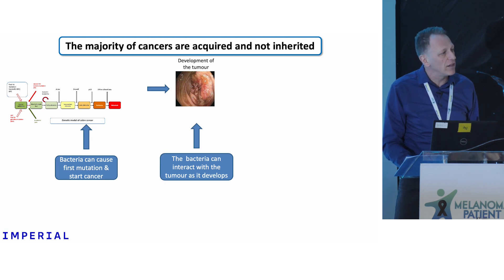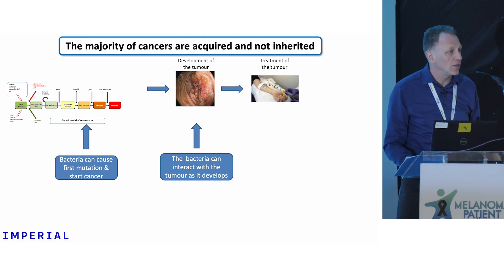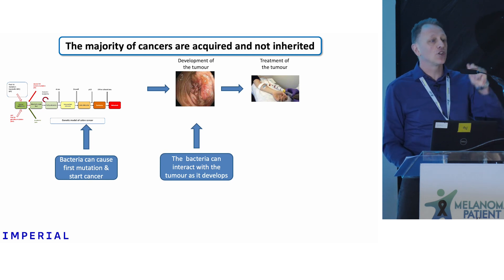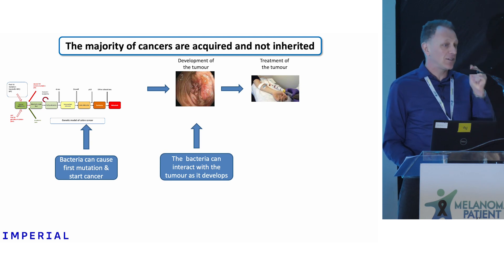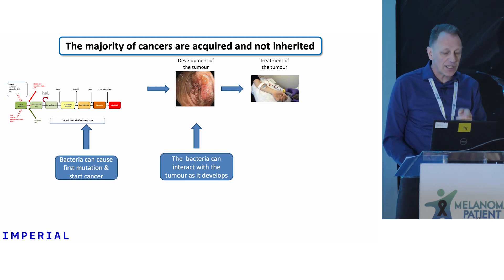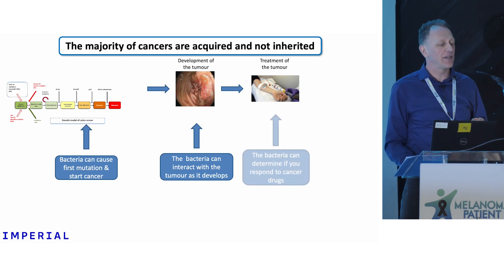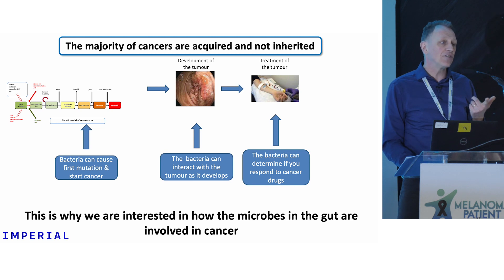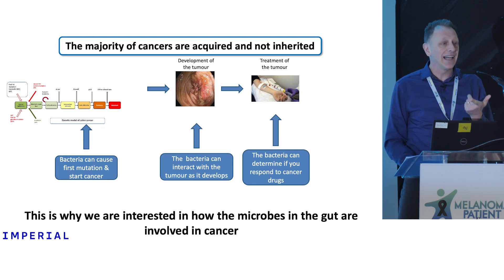One of the really interesting areas for us is in the treatment of the tumour. We know the majority of cancers are acquired rather than inherited, so it gets very difficult to prevent cancers. That's why we see a lot of the research money going into treating cancers. What we need to understand is how we enhance the treatment of these tumours and how the microbiome is involved in it. The bacteria can determine if you respond to a cancer drug.